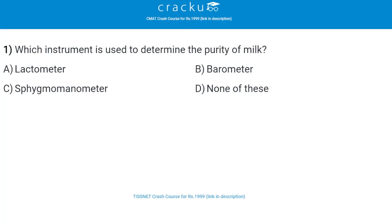Our first question is: which instrument is used to determine the purity of milk? The correct answer is Lactometer, that is option A. Lactometer is used to determine the purity of a sample of milk.